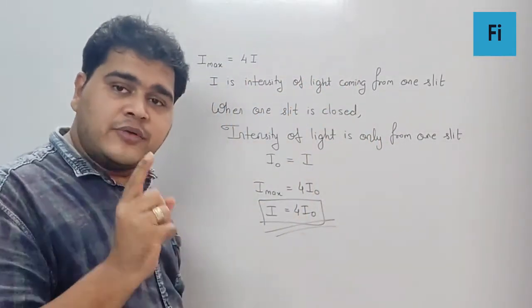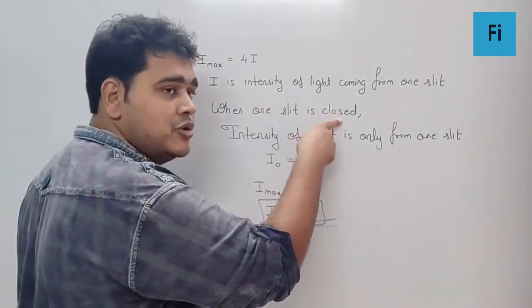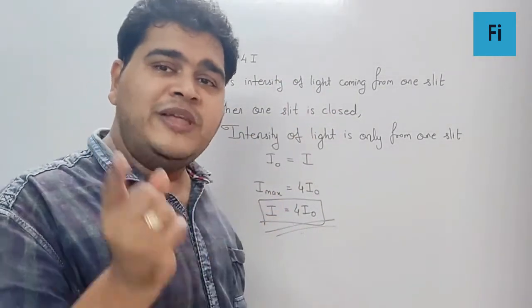Now they have said one slit is to be closed. When one slit is closed, the light which is going to come, the intensity of that light, is going to be only from one slit.